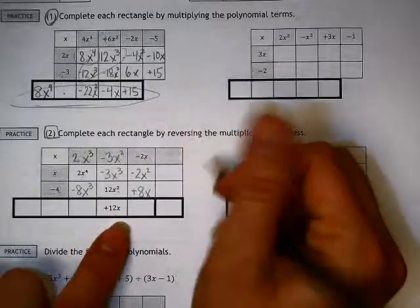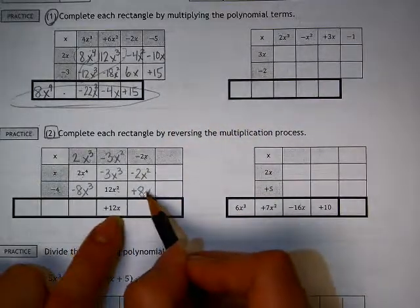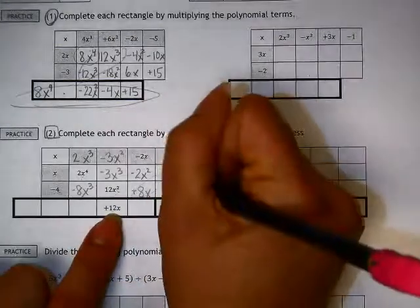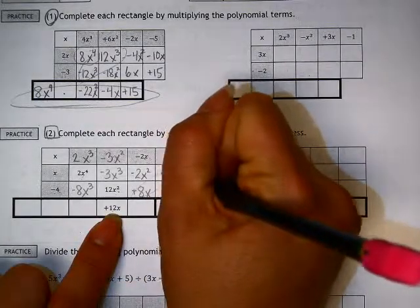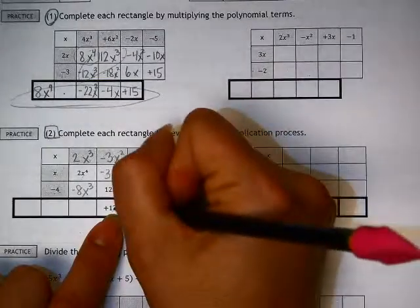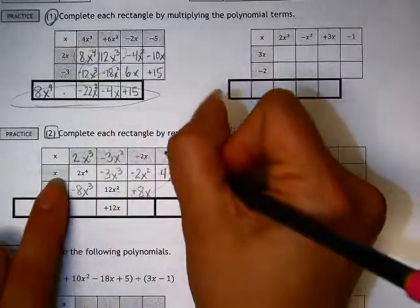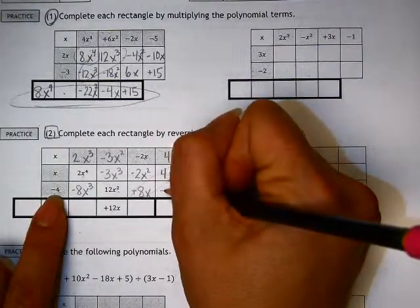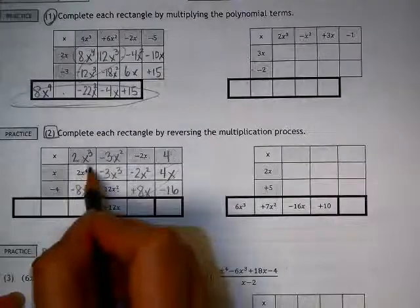So finishing this up, these two guys would have to multiply or add together to get this one here. So this one is going to be 4x because 8 plus 4 is 12. So then 4 must have been 4 times x is x. And then these two multiplied gives me negative 16.